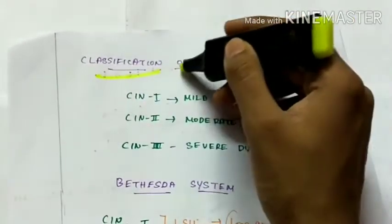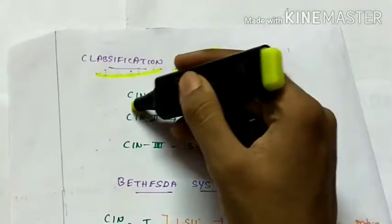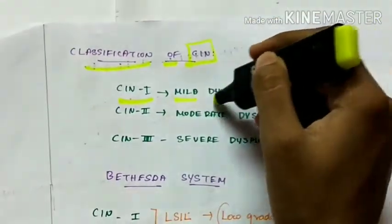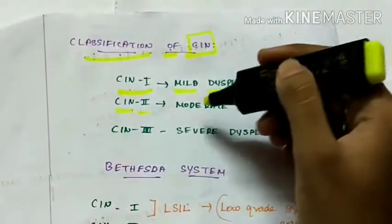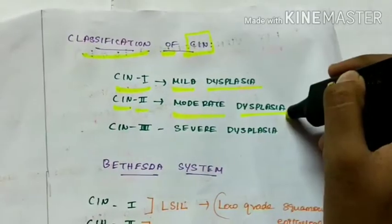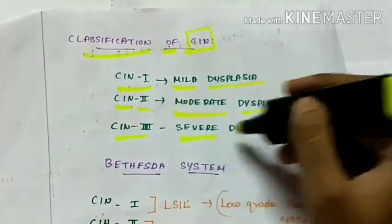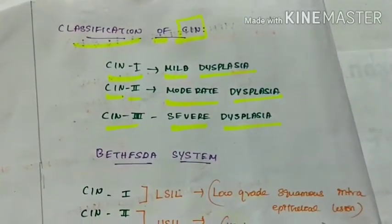Next is the classification of CIN. CIN1 has mild dysplasia, CIN2 in which there is moderate dysplasia and CIN3 which shows severe dysplasia. This is the classification of CIN.